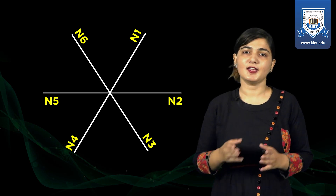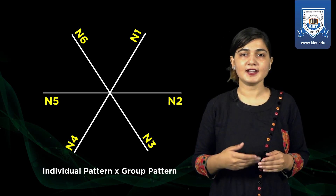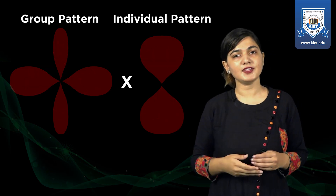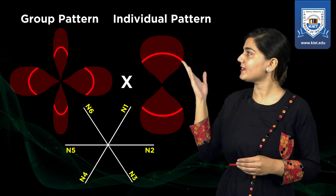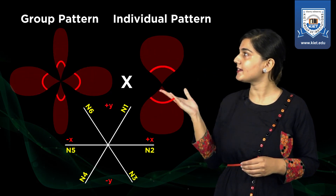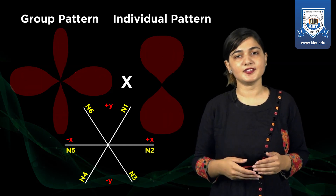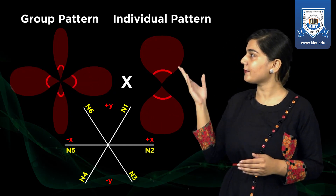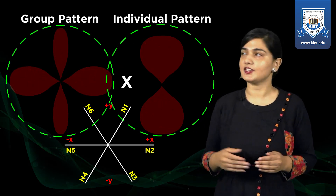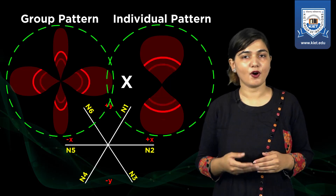Now we will multiply the unit pattern with the group pattern to find out the final radiation pattern. In the direction of nulls there is no radiation, so when these patterns are multiplied we never get any radiation in the direction of nulls. In the plus and minus x direction there is no maxima. In the plus and minus y direction there would always be maxima, as maxima multiplied by maxima gives maxima. But in the plus-x and minus-x direction the maxima are multiplied by null, resulting in null. This is how we can do pattern multiplication throughout 360 degrees.